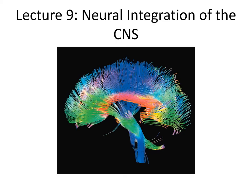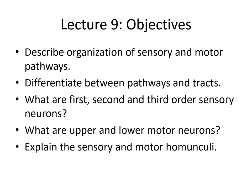In this lecture, we're going to describe the sensory and motor pathways and how they are different and how they're similar. We're going to learn about first, second, and third order sensory neurons and upper and lower motor neurons, which we briefly mentioned in the last lecture. Finally, we're going to describe the sensory and motor homunculi.